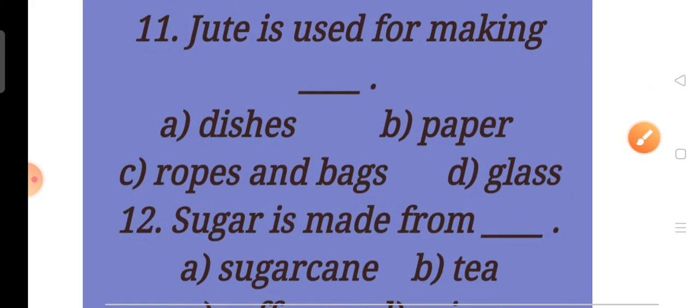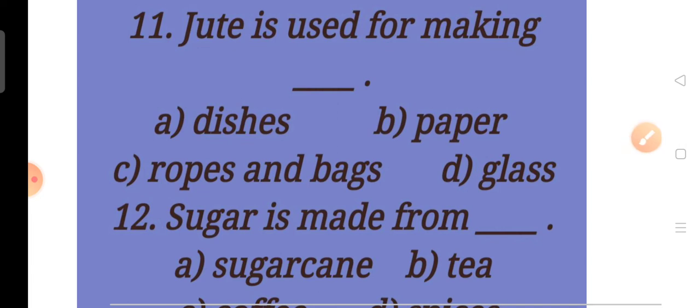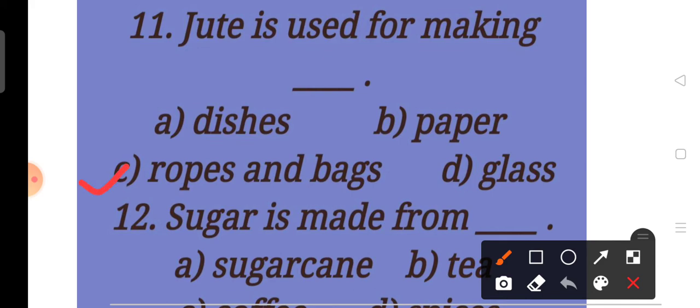Now come to next question, question number 11. Jute is used for making dash. A. Dishes, B. Paper, C. Ropes and Bags, D. Glass. Children, answer will be C. Ropes and Bags. Jute is used for making ropes and bags.